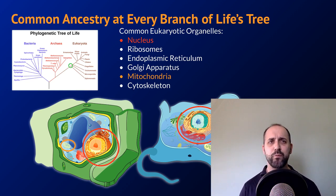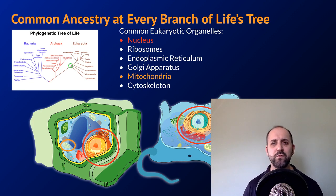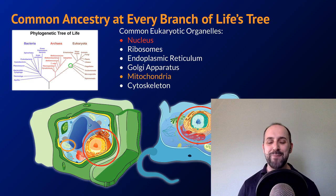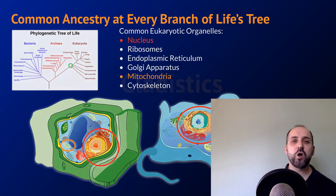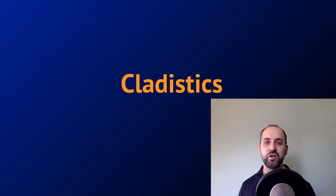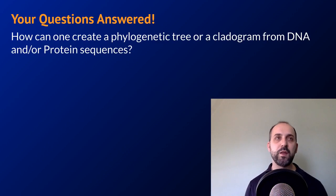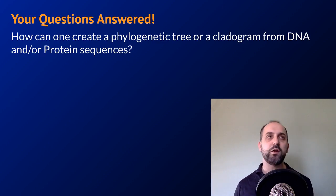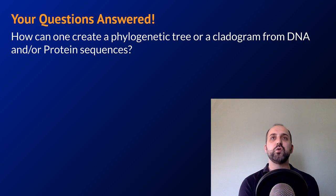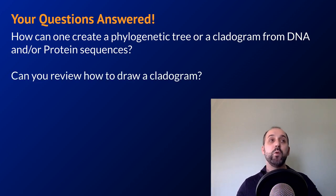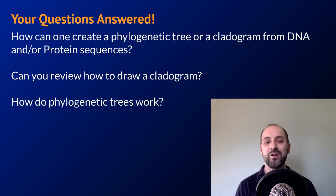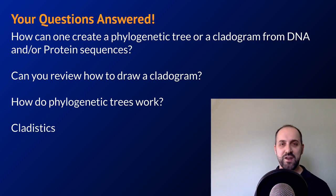We're about 40% through this right now, so hang in there. You can always hit pause and come back to it. We're going to move on to talk about cladistics and phylogeny, which was something that was asked for. Somebody wrote in wanting to know how we can create a phylogenetic tree or cladogram from DNA and protein sequences, how to draw a cladogram, and how phylogenetic trees work. Somebody also wrote in and just said 'cladistics.' So let's talk about these.